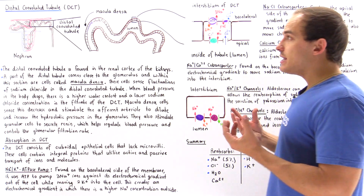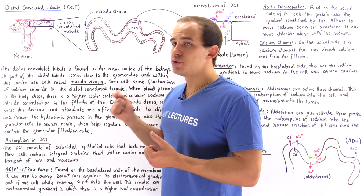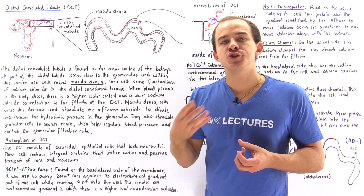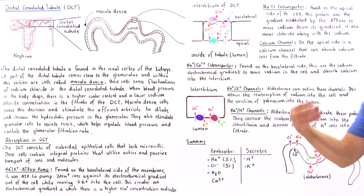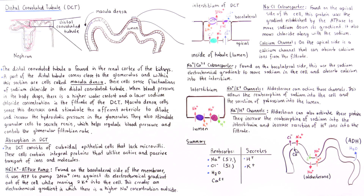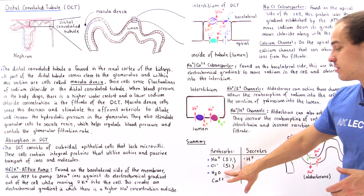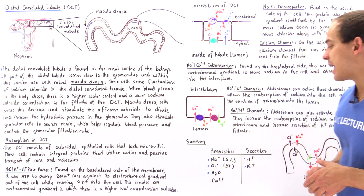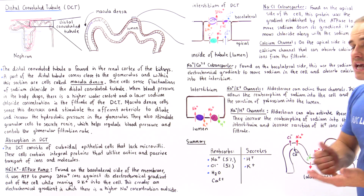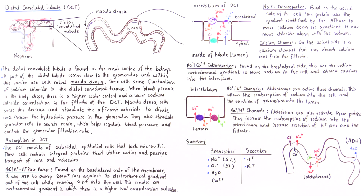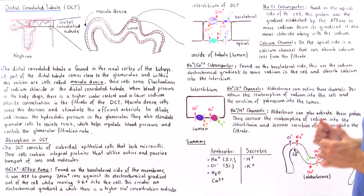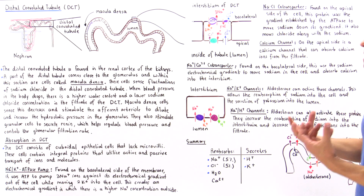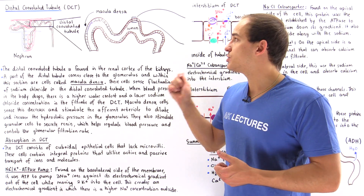To summarize: the distal convoluted tubule reabsorbs about five percent of sodium and chloride — far less than the approximately 65 percent reabsorbed in the proximal convoluted tubule. It also reabsorbs calcium and water. ADH acts on the final section of the DCT to activate channels for water reabsorption. Overall, the DCT acts as a fine-tuning mechanism, with aldosterone, ADH, and parathyroid hormone all modulating the amount of solute and water absorbed.